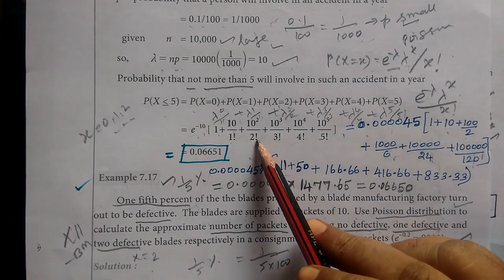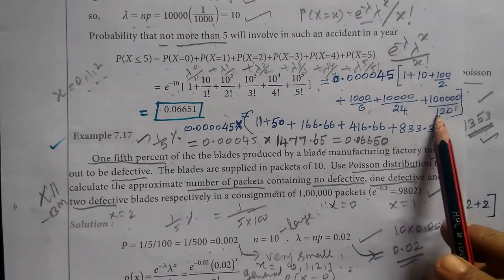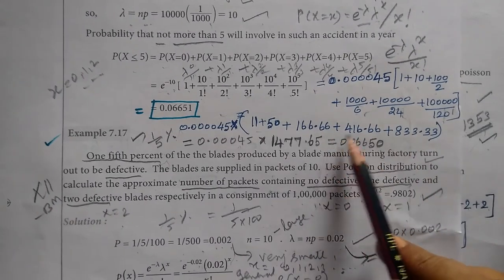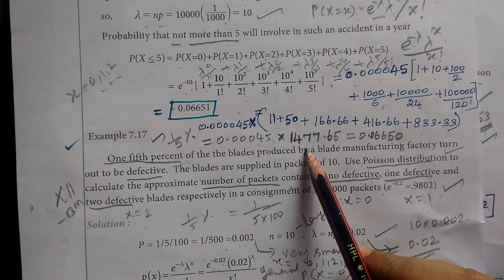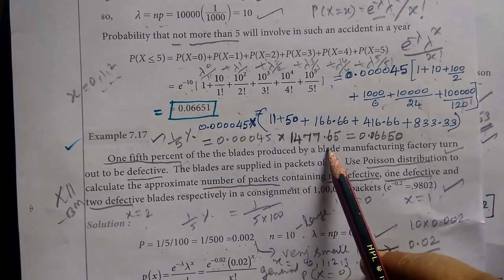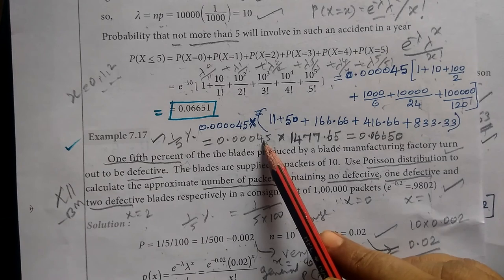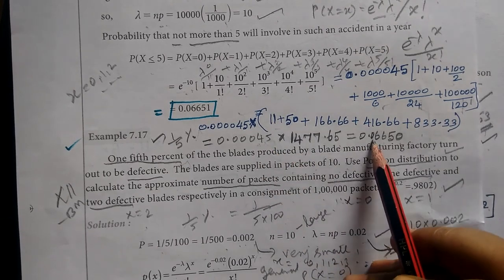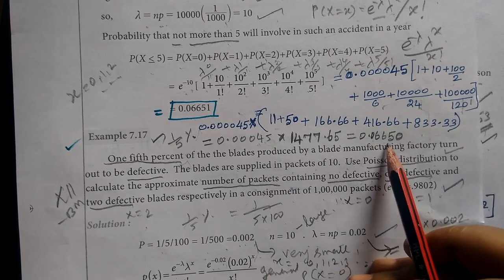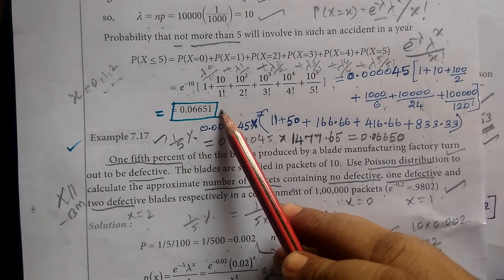Work it out, divide, and add. The answer is e^(-10) times 0.06650. So here is the answer.